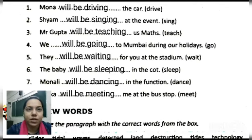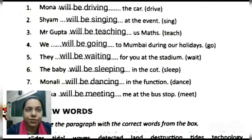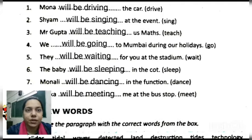Third: 'Mr. Gupta will be teaching us maths.' Mr. Gupta means 'he,' so we write 'will be' and add '-ing' to 'teach,' giving 'will be teaching.' Four: 'We will be going to Mumbai during our holidays.' With 'we' we can write 'shall' or 'will.' When we have holidays, during those holidays we will go to Mumbai.